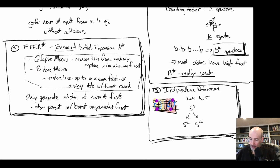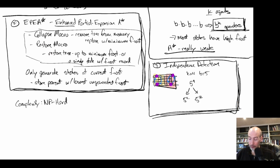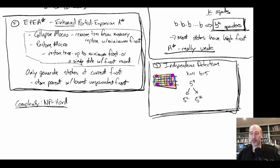The complexity of multi-agent pathfinding in general is NP-hard, meaning we don't know of any polynomial time solvers that find optimal solutions. This is a very hard problem. Even basic single-agent pathfinding is polynomial, so when we move to multi-agent pathfinding we're dealing with a really hard problem.